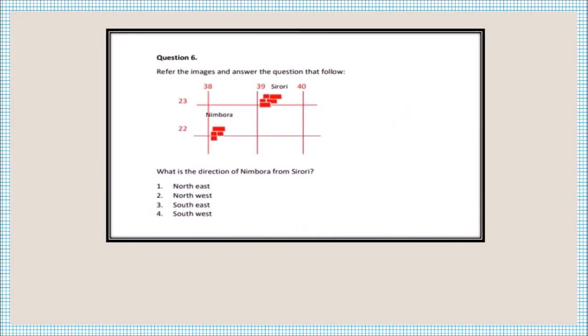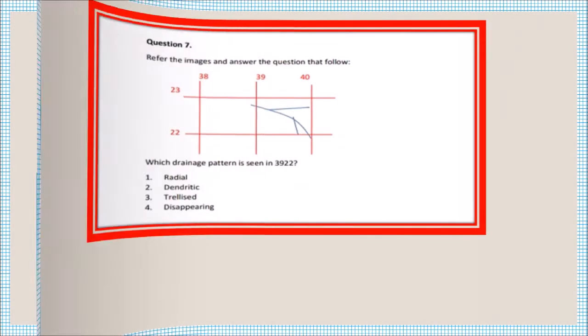What is the direction of Nimbora from Sirori? When finding direction, remember the words 'to' and 'from' — wherever the word 'from' appears, you draw your north line at that point. From there you join the line, and you can see it points east to southwest. So the direction of Nimbora from Sirori is east to southwest.